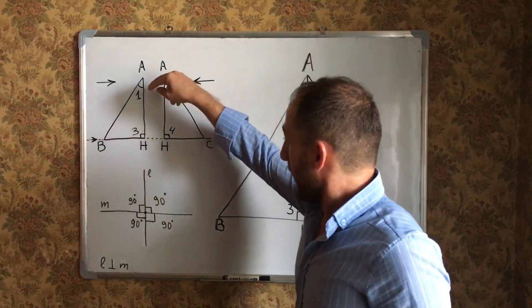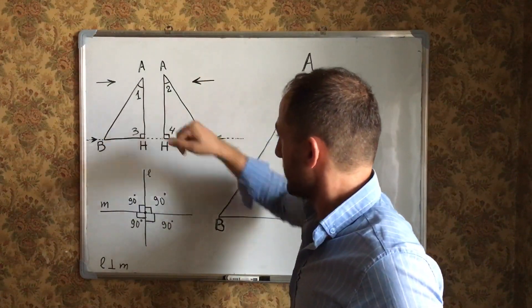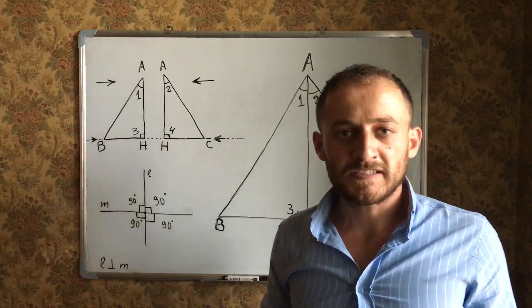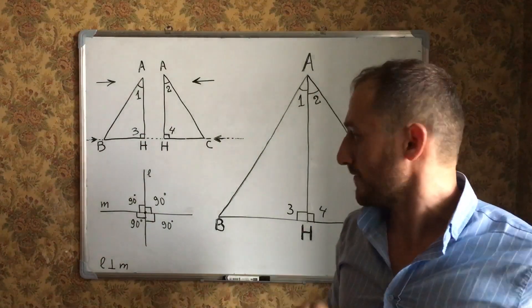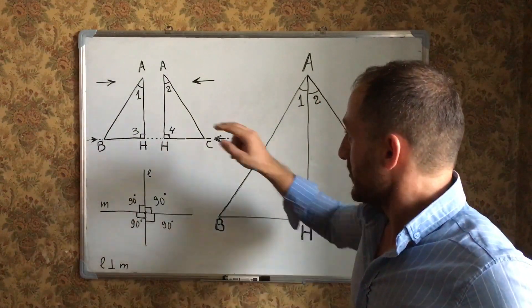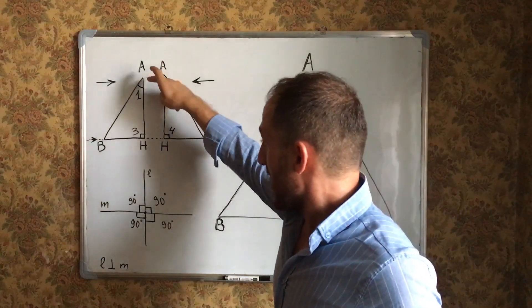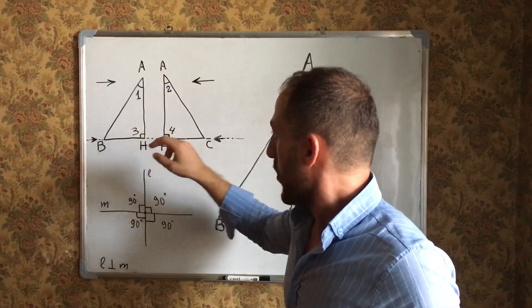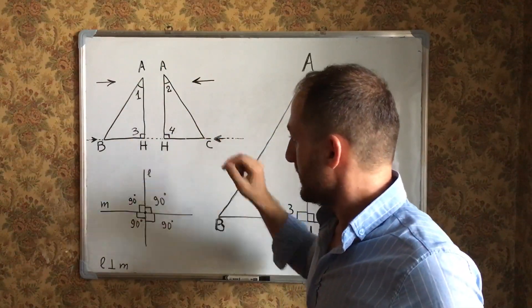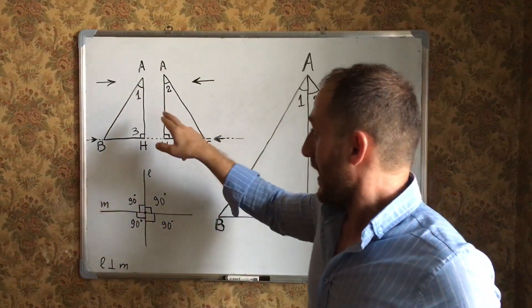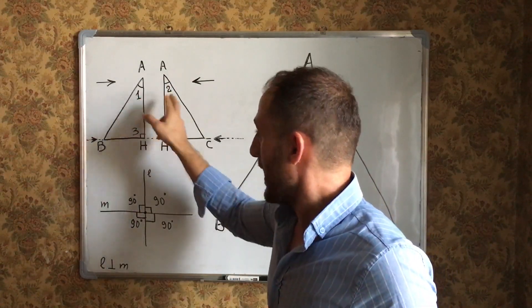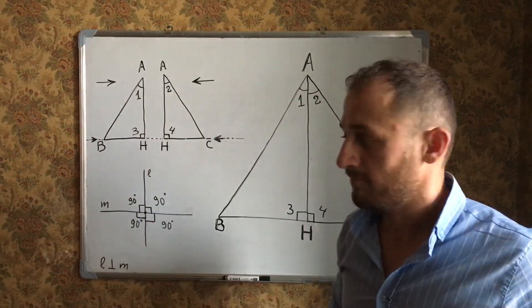AH is congruent to AH — the congruent segment is reflexive. Then triangle AHB is congruent to triangle AHC by the ASA theorem.